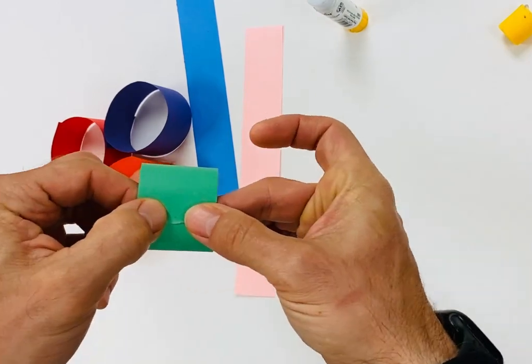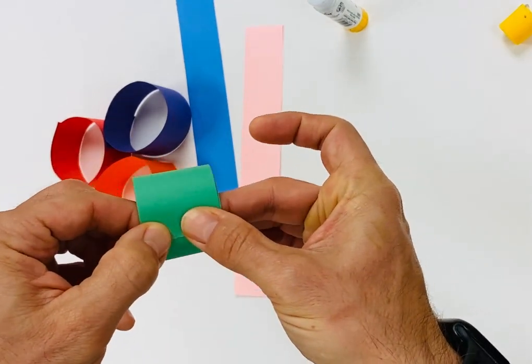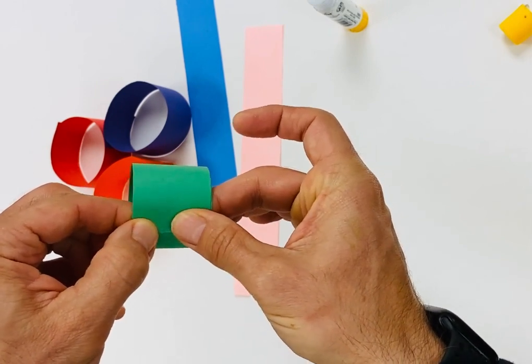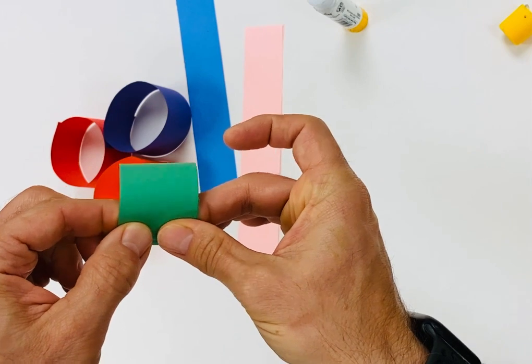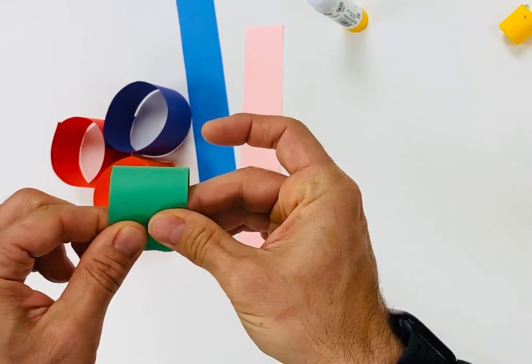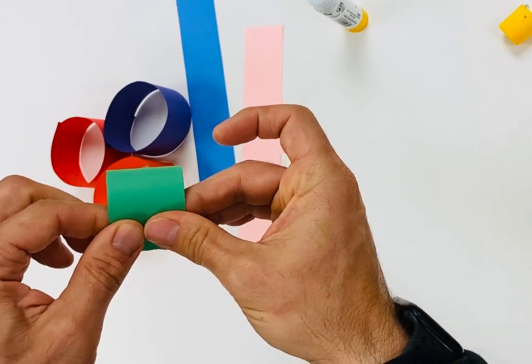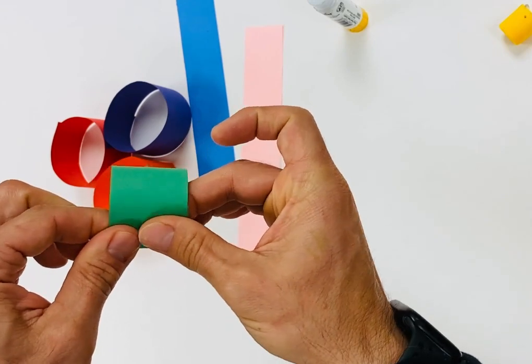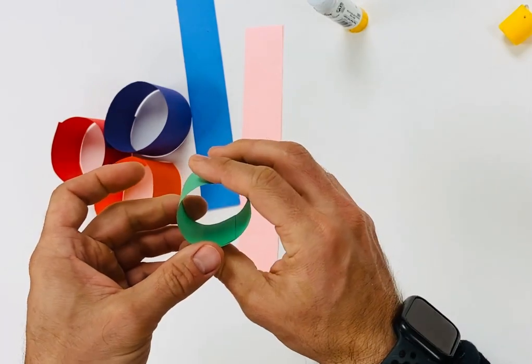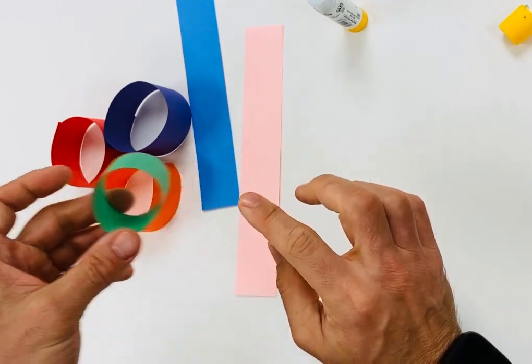I'm going to press here for about 12 seconds. One, two, three, four, five, six, seven, eight, nine, ten, eleven, twelve. Alright, this small circle is gonna be the center of my flower.